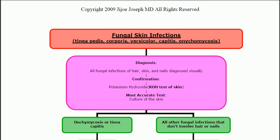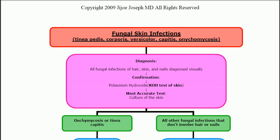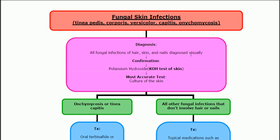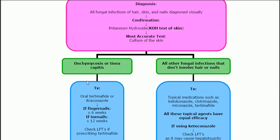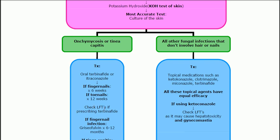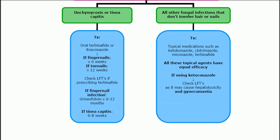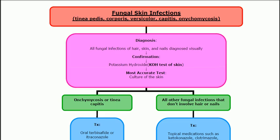Quick review: fungal skin infections — pedis, corporis, versicolor, capitis, onychomycosis. Diagnose visually, confirm with KOH (potassium hydroxide of the skin), most accurate is culture of the skin. If it's onychomycosis or tinea capitis, use terbinafine — six weeks for fingernails, 12 weeks for toenails. Check LFTs; if elevated, switch to griseofulvin for fingernail infections only, given for six to 12 months, or six to eight weeks for tinea capitis. Everything else: ketoconazole, clotrimazole, miconazole, terbinafine — all equal efficacy. If using ketoconazole, monitor LFTs and watch for gynecomastia. That's our fungal skin infections.